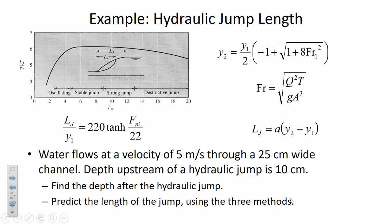To get some practice before going to the lab, calculate the hydraulic jump length for a scenario where water flows through a channel at a known velocity and width, with a known upstream depth. Calculate the Froude number, then use the Bellinger momentum equation to find the depth after the jump, and predict the jump length using all three methods: the nomograph, the Hager method, and the simpler equation.